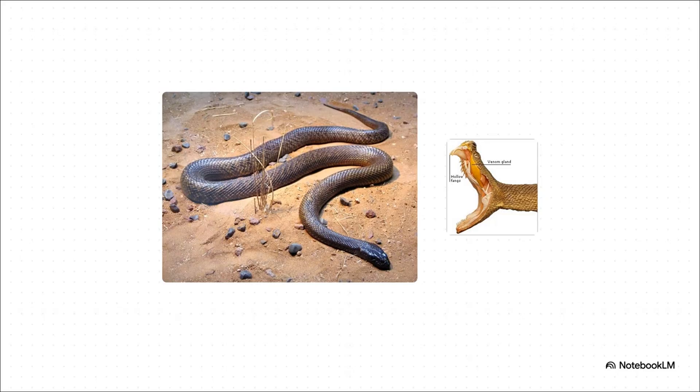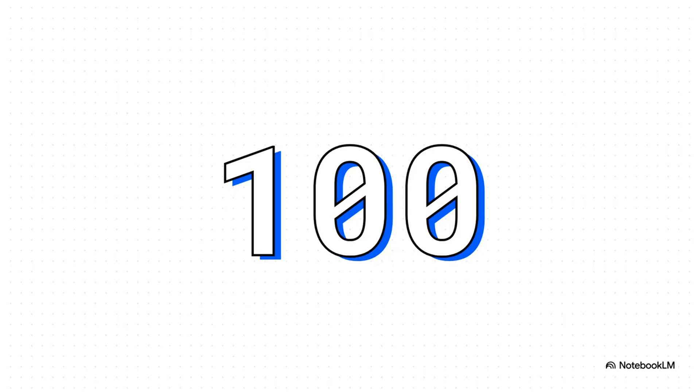Case in point, the Inland Taipan. It's widely considered the world's most venomous land snake. And its venom isn't just one simple poison. It's a super complex and powerful cocktail designed to be as efficient as possible.